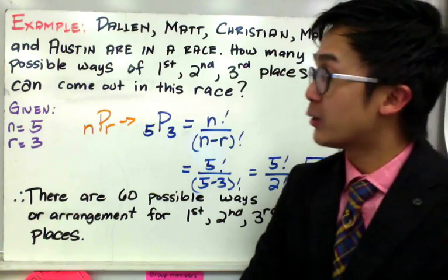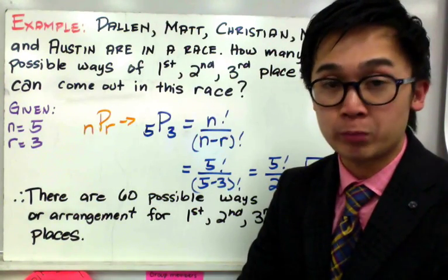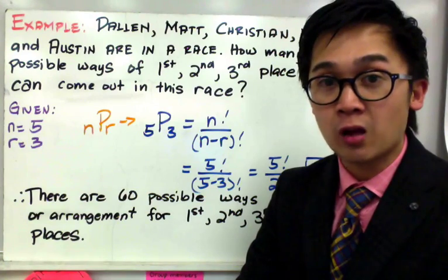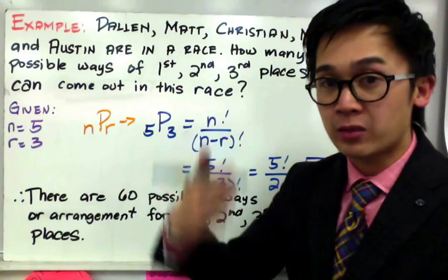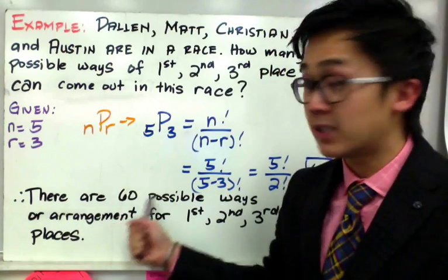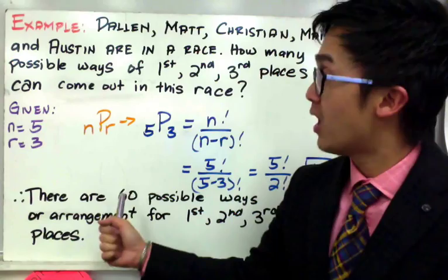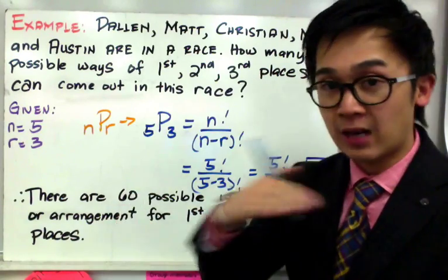So that means using this mathematical formula of permutation, we're able to solve for the number of ways we can arrange the 1st, the 2nd, and the 3rd place in this particular race. And there are 60 ways that we can come up with that combination or that arrangement.